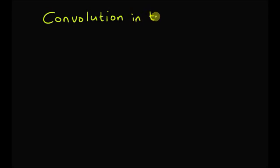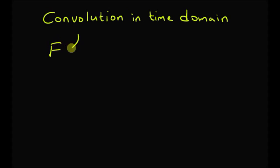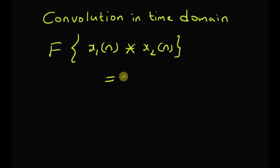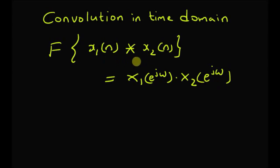The first property is convolution in time domain. The convolution property states that the DTFT of x1(n) convolved with x2(n) is equal to X1(e^jω) multiplied by X2(e^jω). That is, convolution in time domain is equivalent to multiplication in frequency domain.